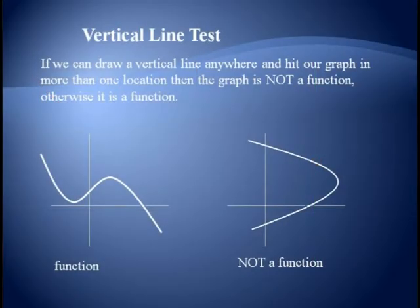Two examples are shown here. In the first case, a vertical line drawn anywhere only hits the graph once, so the first one is a function. But just like our other picture in the second case, we hit the graph in two locations, so it's not a function.